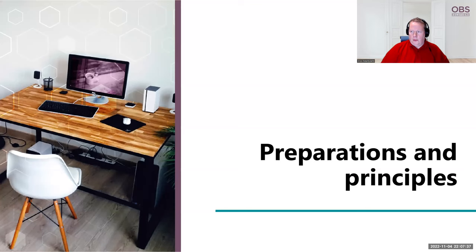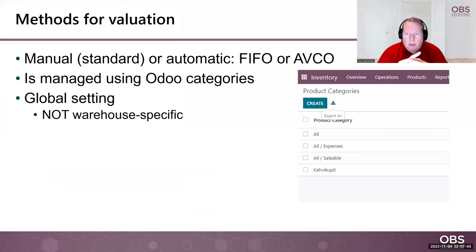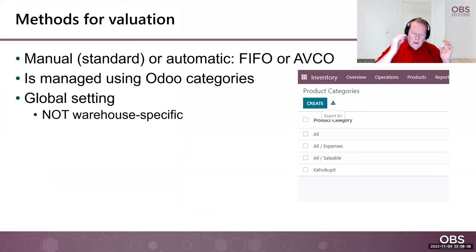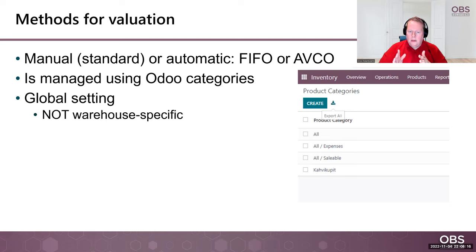First, a couple of words about the preparations and principles in order to see the inventory valuations. Inventory valuations in Odoo are based on two possible ways of doing the valuations. First is a manual valuation — if you want to do it manually, the system expects the accountant to go into the Odoo system and write the value of the inventory every month using the accounting application. This is the default behavior, and it's called, for some reason, 'standard.'